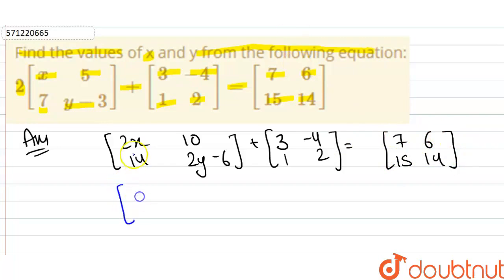Now, add these two matrices. We get 2x plus 3 equals 2x plus 3, 10 minus 4 equals 6, then 14 plus 1 equals 15, and 2y minus 6 plus 2 equals 2y minus 4, that equals our matrix 7, 6, 15, and 14.